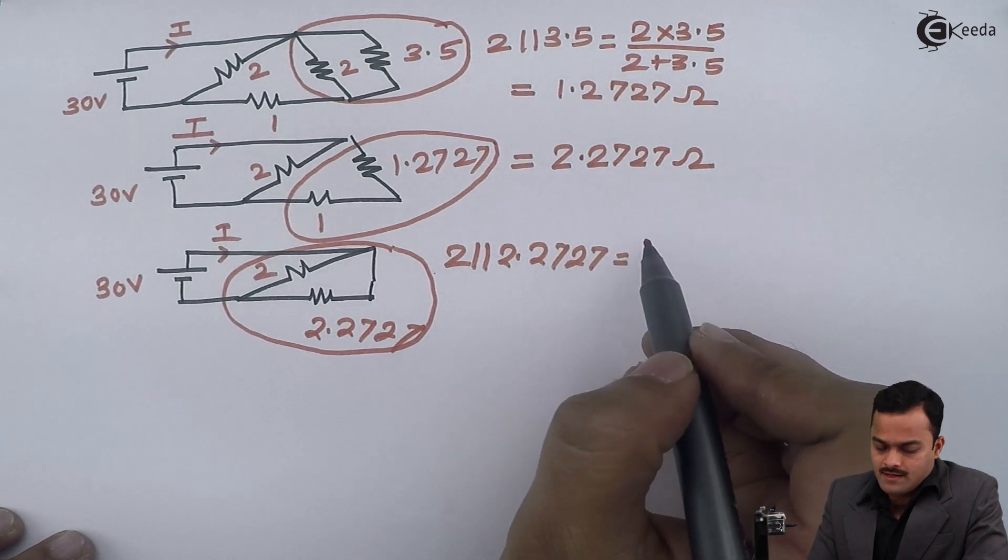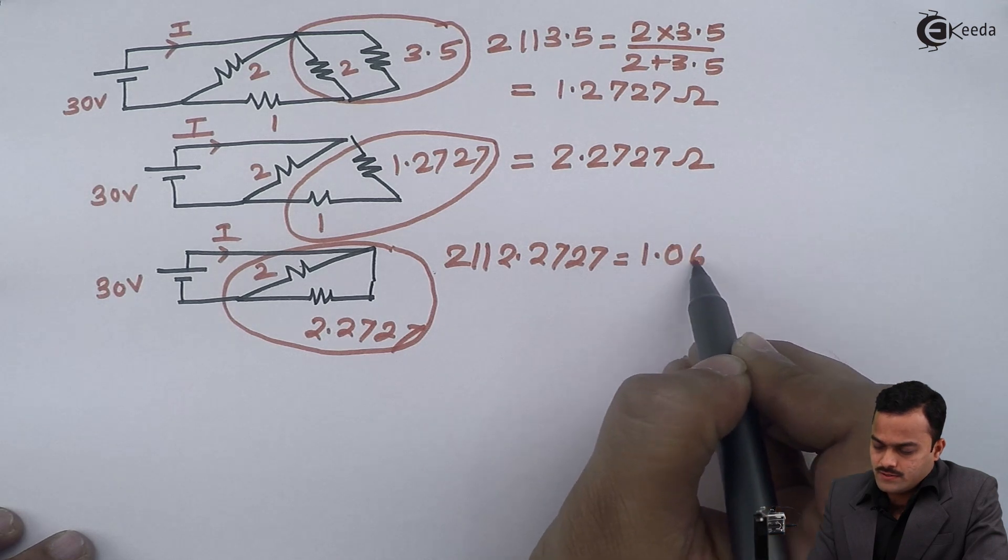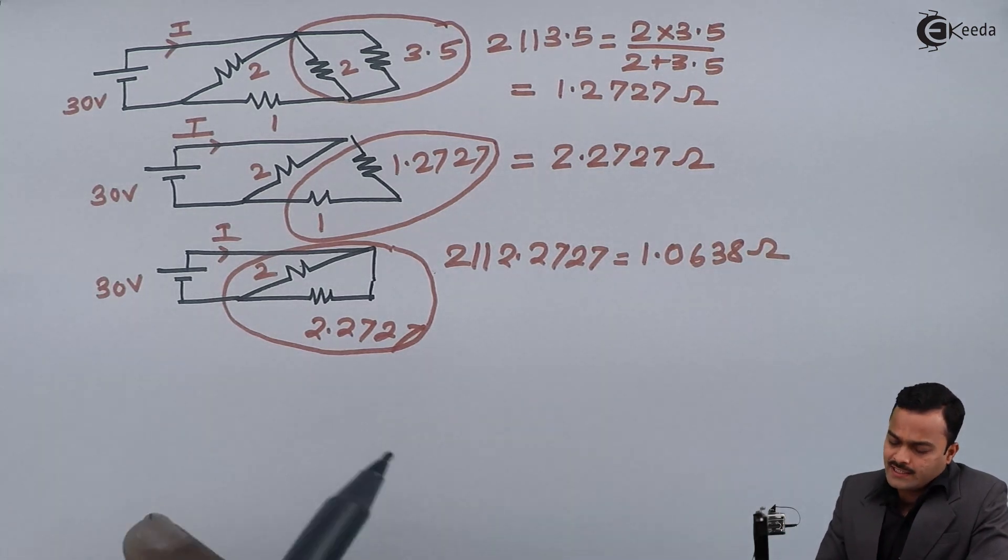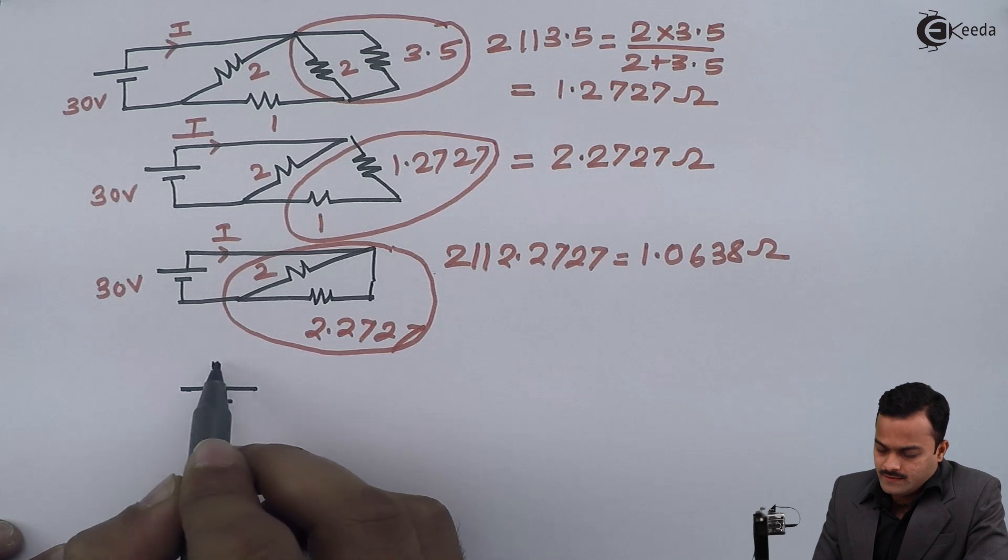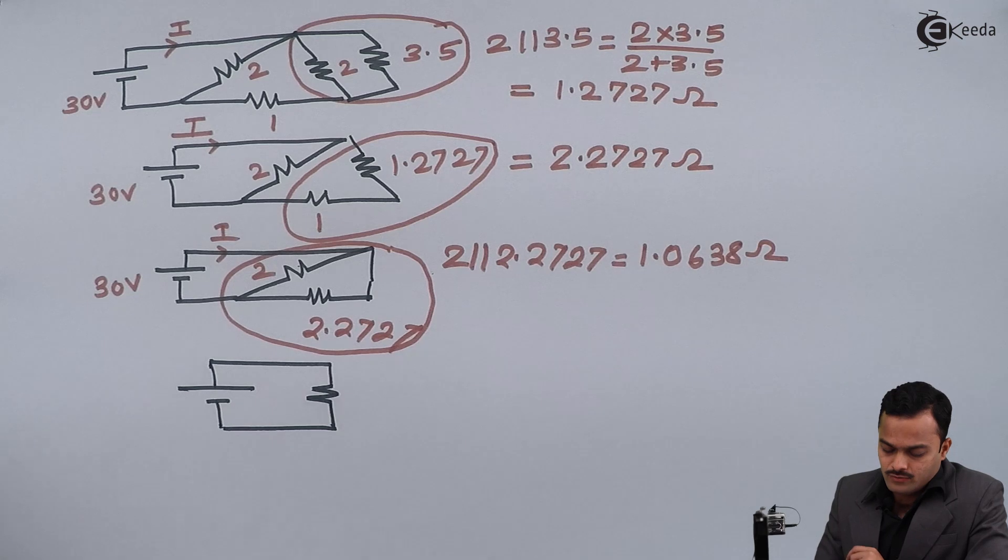So finally the circuit looks like this, and finally this 2 ohm and this 2.27 come in parallel, giving you an answer of 1.0638 ohm. So the circuit becomes very simple now. We have one battery and one resistor with value 1.0638 ohm, the battery is 30 volts, and current given by the battery is I.